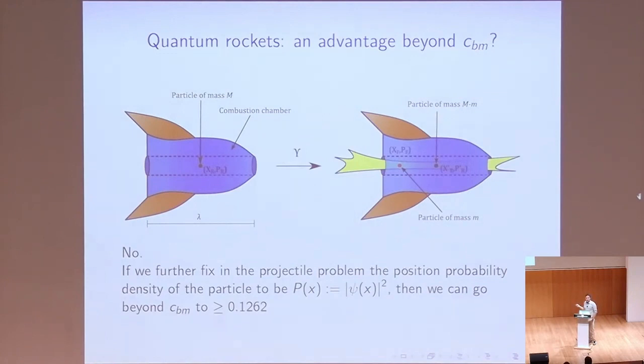But if you change the problem a bit, if you compare the quantum particle with classical particles, not only that have the same momentum distribution, but also the same position distribution, then we can go beyond the Bracken-Mellory constant to 0.1262. So the advantage is there.